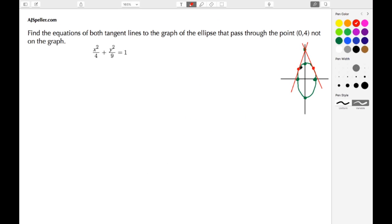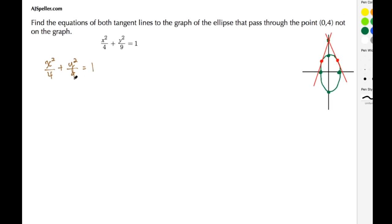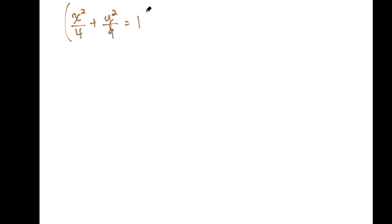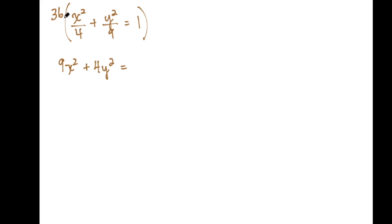Now let's start solving this problem. First I want to rewrite the ellipse as x²/4 + y²/9 = 1. I want to get rid of the denominators, so I'll multiply by the least common multiple, which is 36. 9 times x² leaves me with 9x², and 4 times y² leaves me with 4y², and 36 times 1 gives me 36.